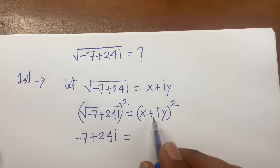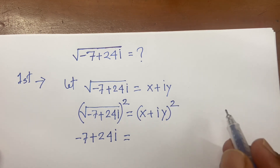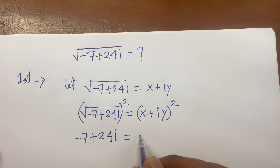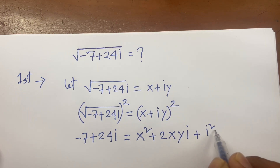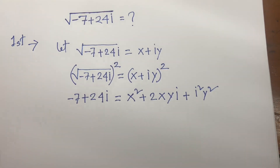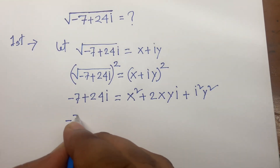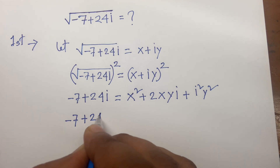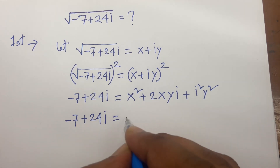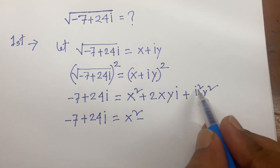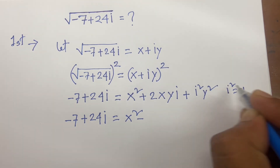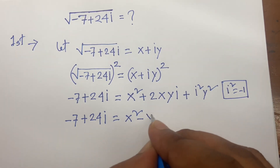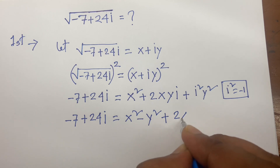We know that (a + b)² equals a² plus 2ab plus b². According to this, we can write x² plus 2xyi plus i²y². Now minus 7 plus 24i equals x² minus y² plus 2xyi, since i² equals minus 1.